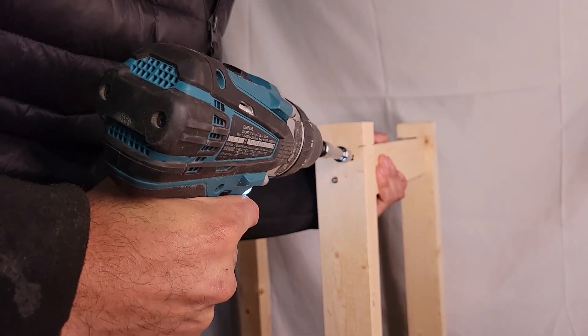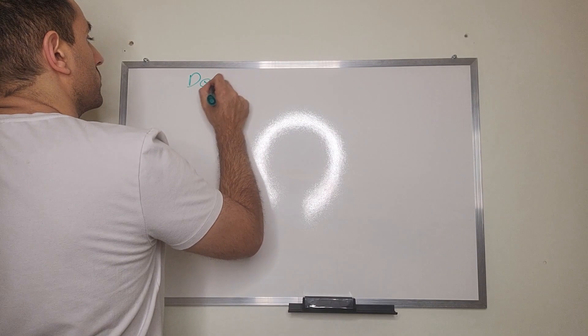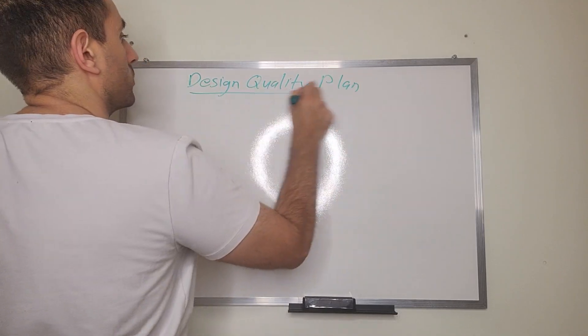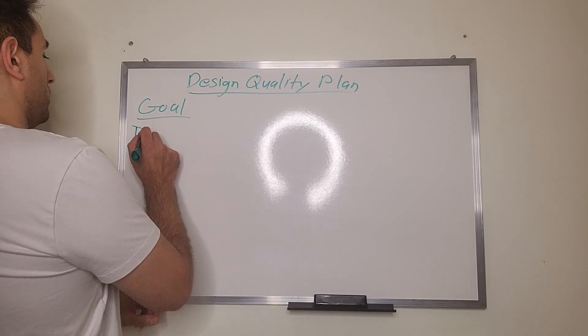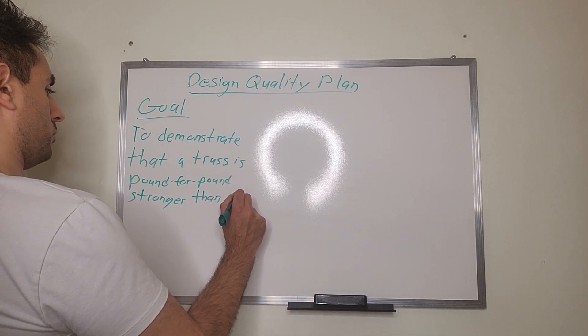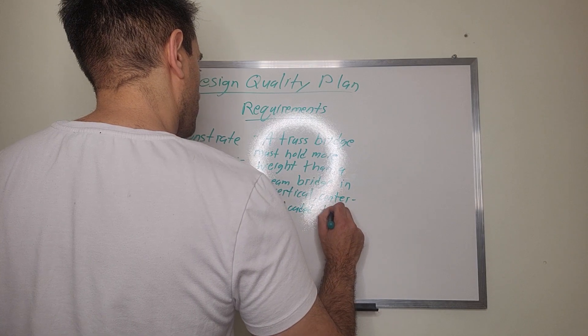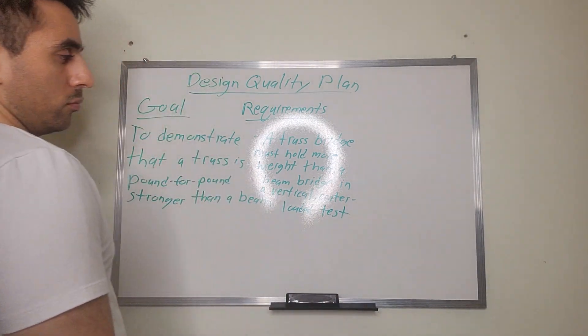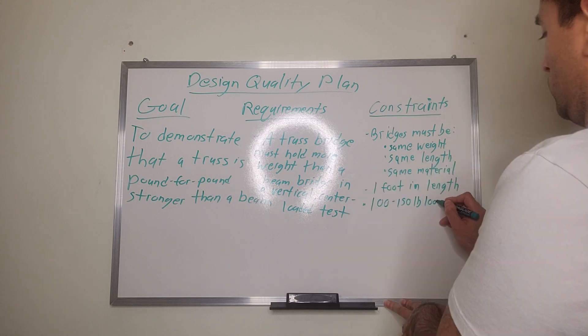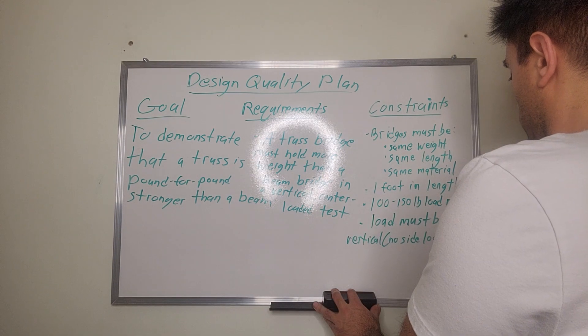Every engineering project has to have a goal, a reason why you're doing the work. At my work, we always start each project with what's called a design quality plan, which is basically a document that identifies your scope, your goals, your constraints, requirements, and so on. The goal for this project might have been to explain how trusses work and demonstrate that they are in fact the strongest type of structure. My requirement was that my truss bridge had to be able to hold more weight than a beam bridge. Both bridges had to be the same weight for a fair comparison, the same length, no more than 100 to maybe 200 pounds of breaking load, and the load had to be acting vertical, straight down.